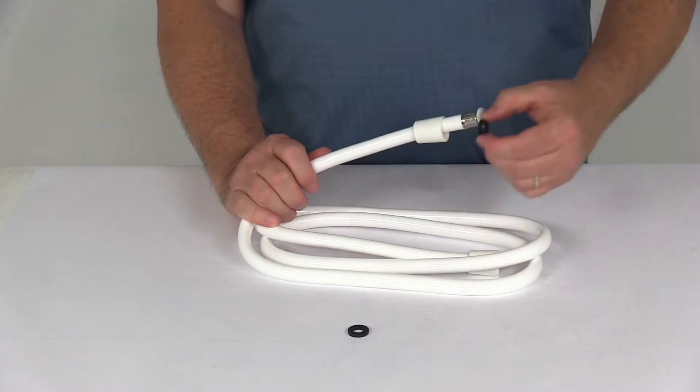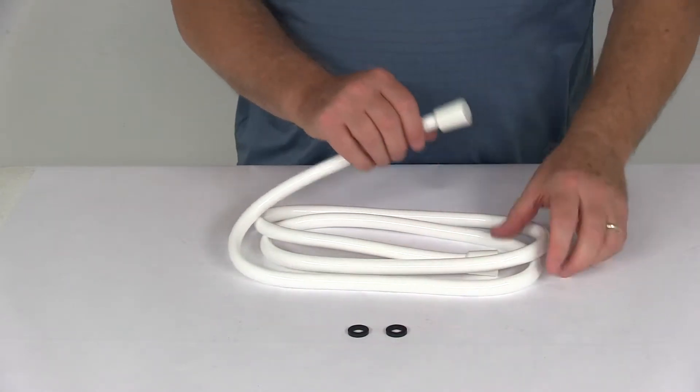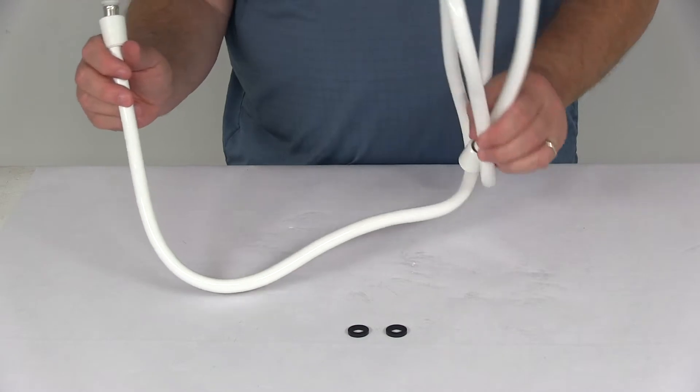It doesn't come with the two rubber hose washers that will be used when you do install this. And again, the length on this hose is 72 inches.